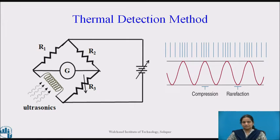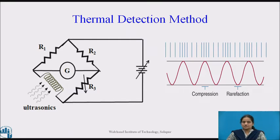The first detection method is thermal detection. As the name indicates, thermal means it is related with temperature. A fine platinum wire probe is used in this method for the detection of ultrasonic waves. Due to alternate compressions and rarefactions in the medium resulting from ultrasonic waves, there occurs a change in the temperature at nodes. The wire is alternately heated and cooled, which changes the resistance at nodes. This change in the resistance of the platinum wire is detected by a sensitive bridge as shown in the figure.